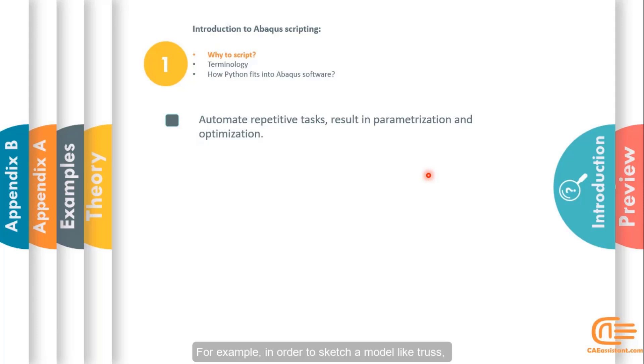For example, in order to sketch a model like truss, which some of its parts repeated continuously, we can use scripting to save our time in sketching.